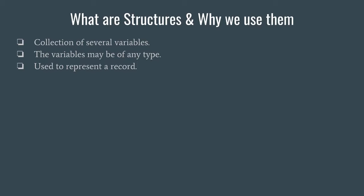You might ask: why not just use separate variables? We could use a character array for the book name, another for the author name, an integer for book ID, and a float for book price. But that doesn't work well because that way you can only store the record of one book per set of variables. If you need to store records for 5, 10, or 100 books, you'd have to declare many separate variables, which is not handy or feasible. To overcome this problem we use structures.